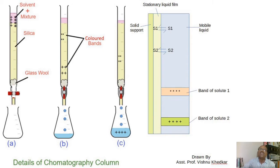If the substances are colored, they can be easily visualized. If they are not visible, a visualizing agent is used. In this way, by using the chromatography technique, we can separate mixed organic substances from their mixture whenever the mixture is in small quantity. I will now explain the remaining part in detail with the help of the board.